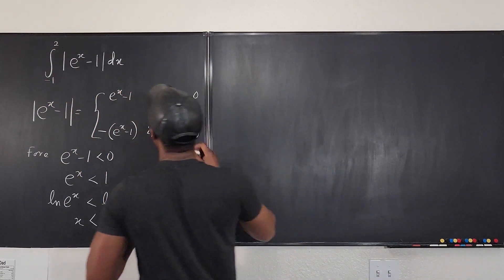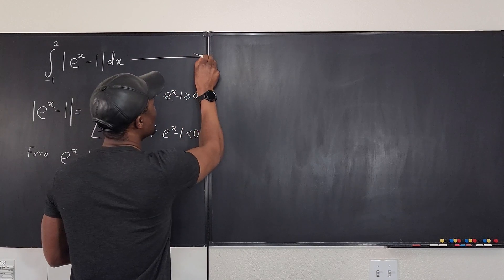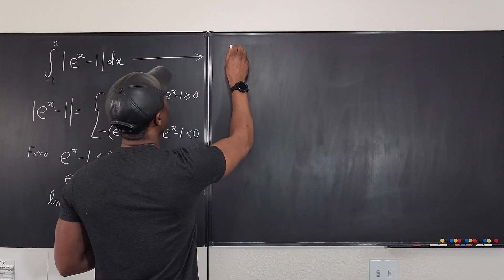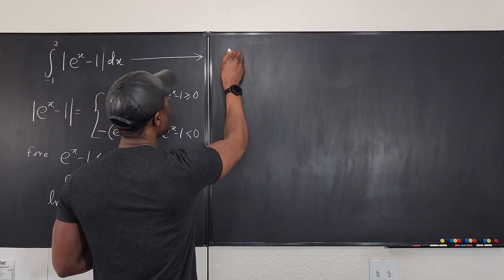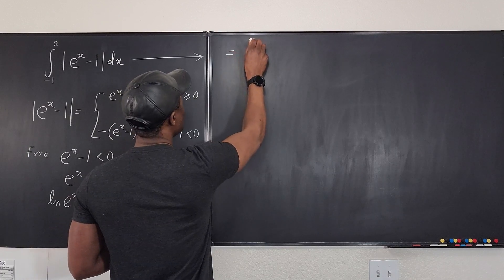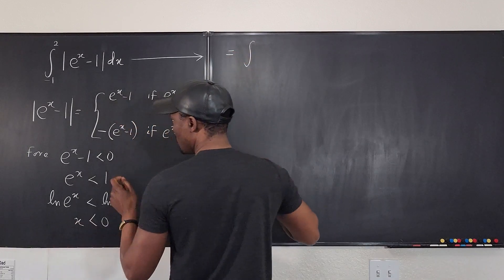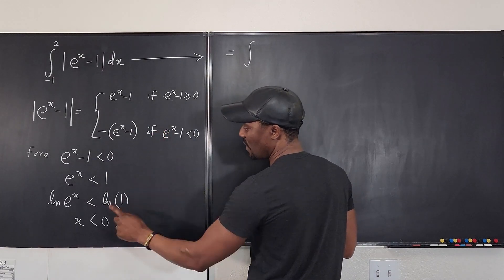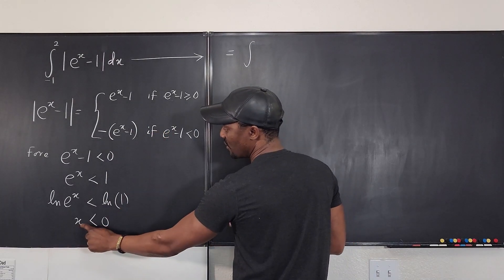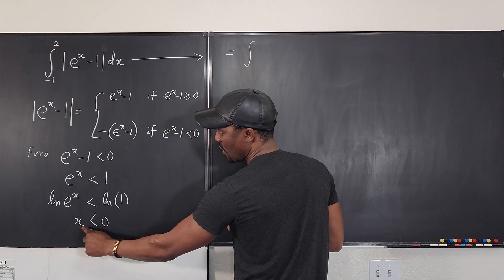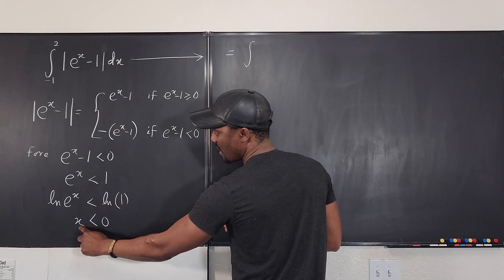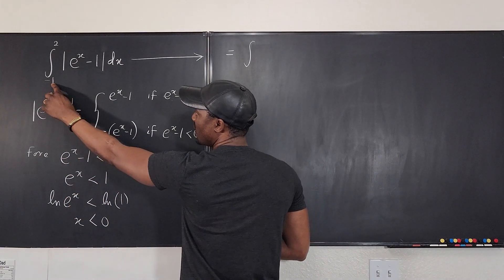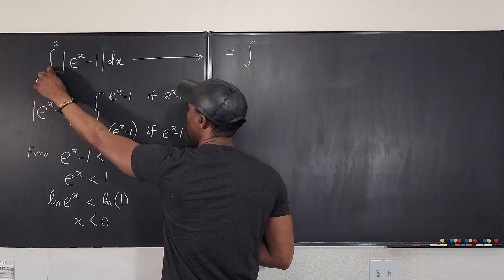So this can be translated directly as the integral. This is equal to the integral — the first one covers the values of x where x is less than zero. So it's going to be from negative one, because this is the smallest value, up to zero.